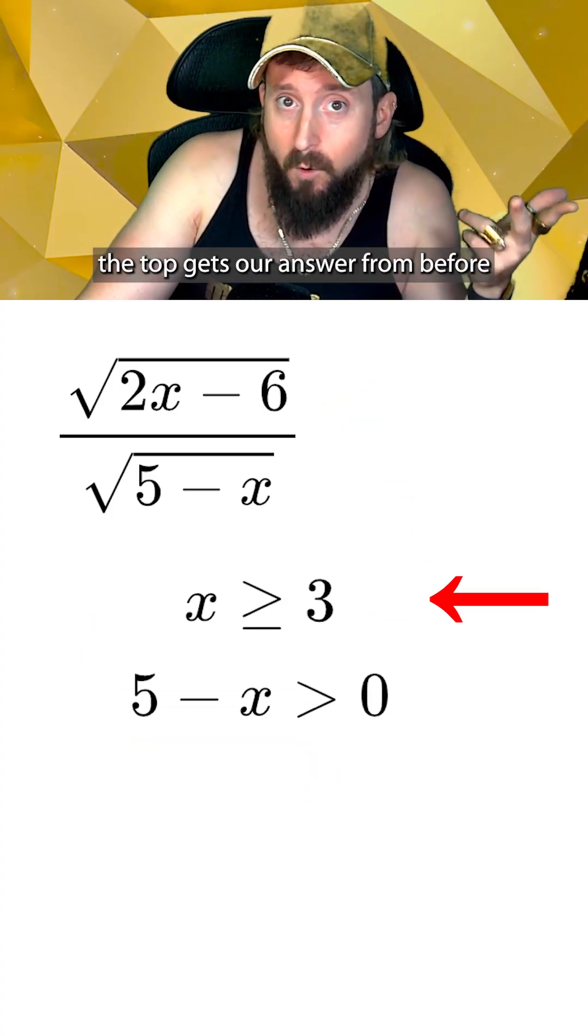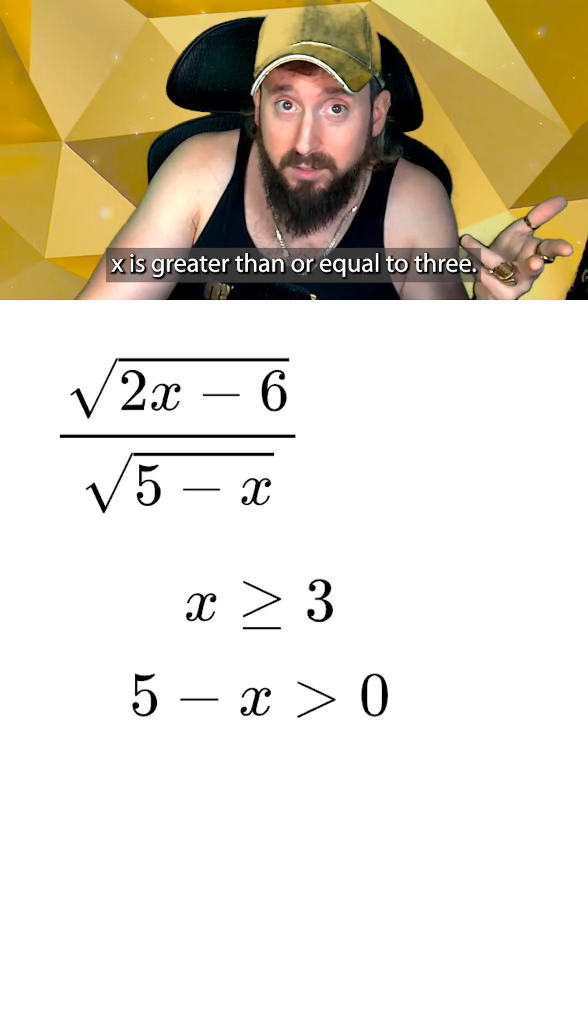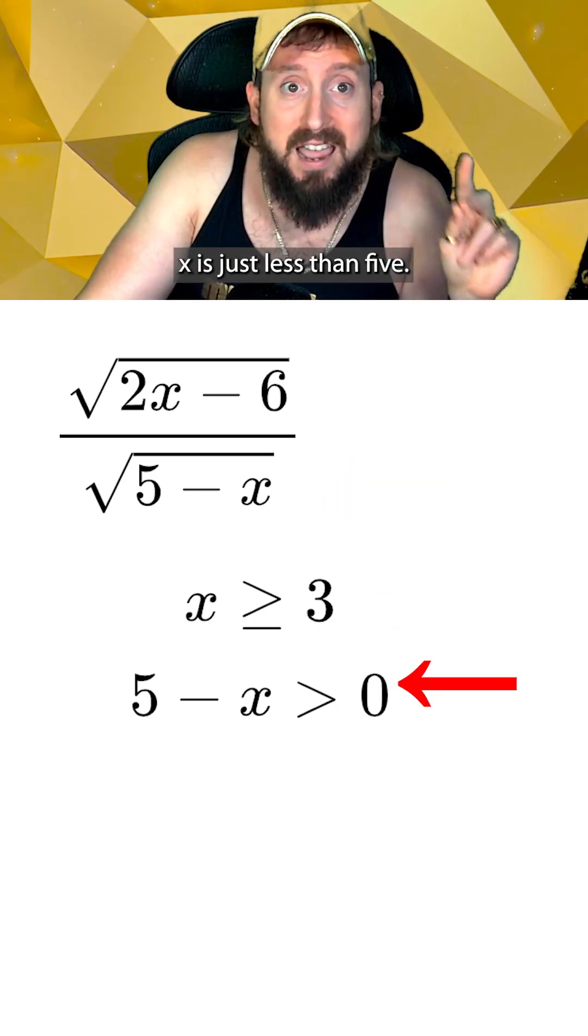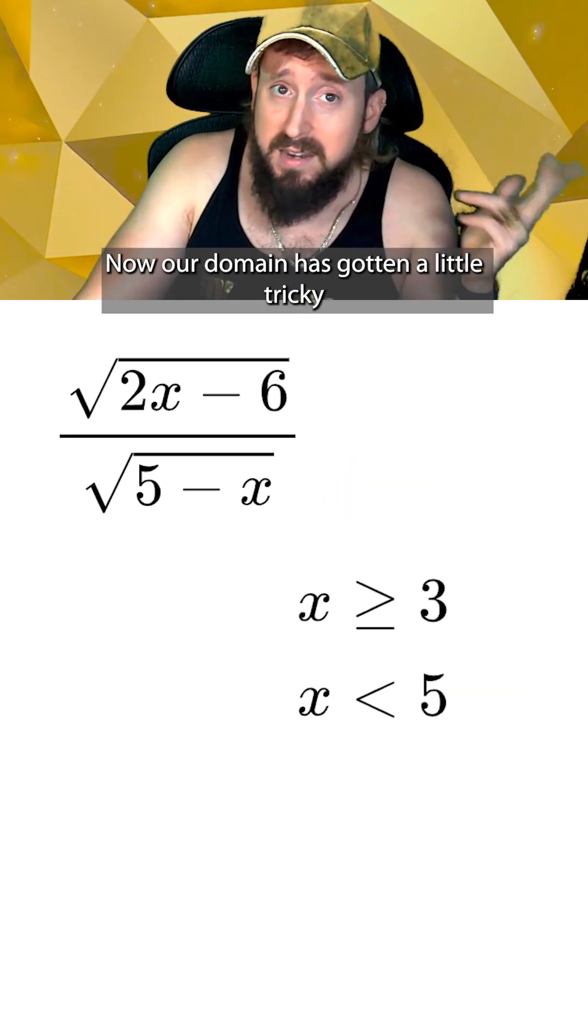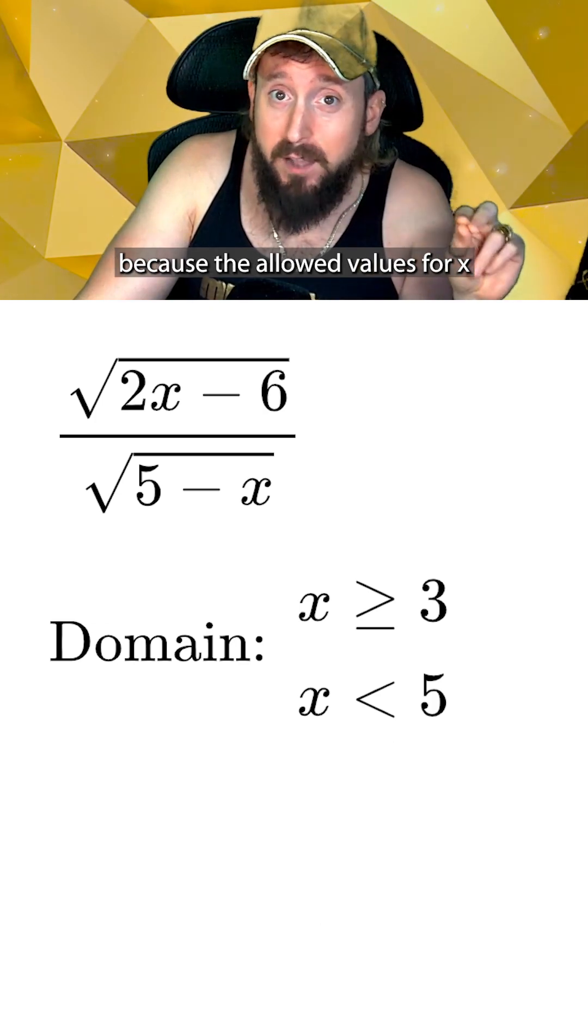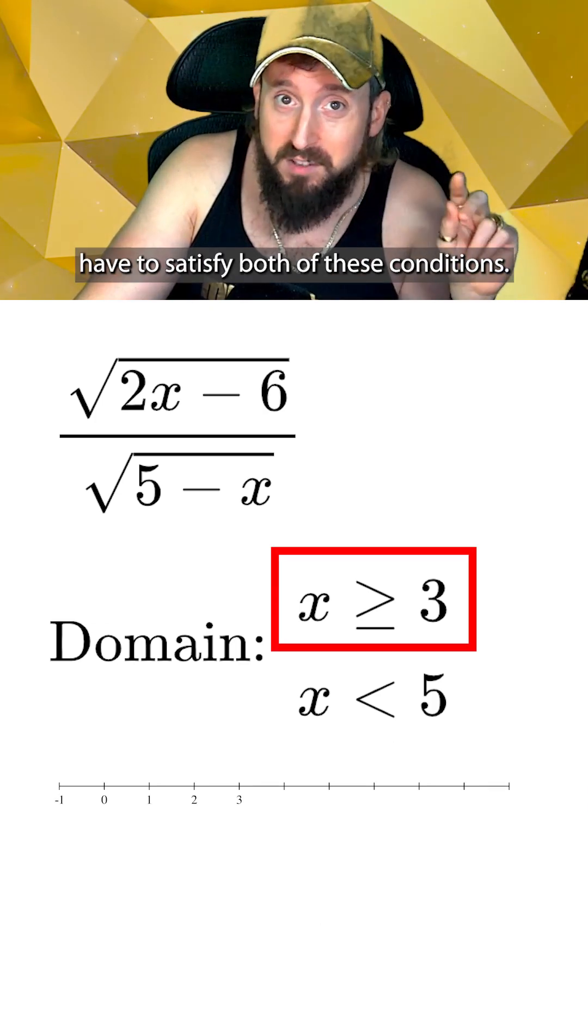Working on the top gets our answer from before, x is greater than or equal to 3, while for the bottom, we get that x is just less than 5. Now our domain has gotten a little tricky because the allowed values for x have to satisfy both of these conditions.